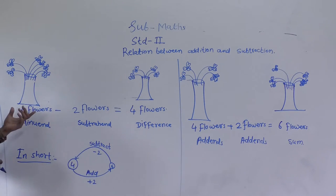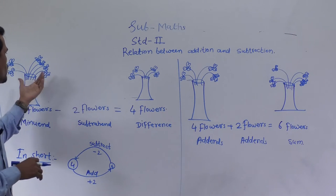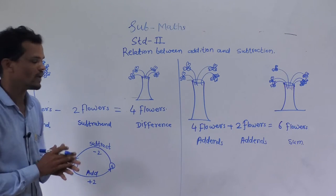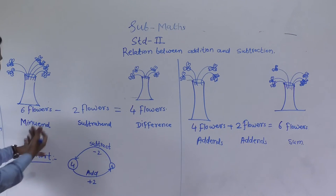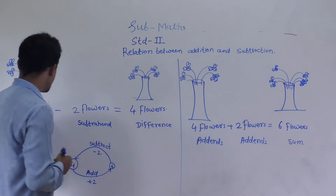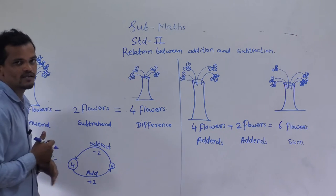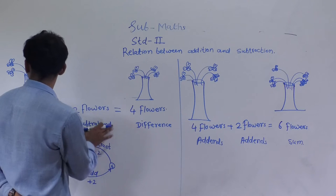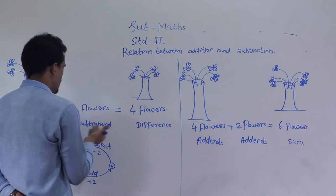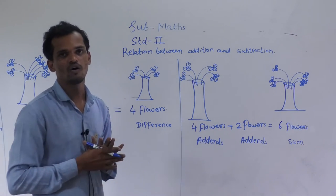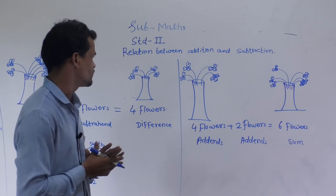See here, there were 6 flowers in the vase. Radha picked 2 flowers from them. How many flowers are left? 4 flowers are left. So here 6 is the minuend — a number from which another number is to be subtracted is called the minuend. This 2 is called the subtrahend, means a number to be subtracted from another number, and 4 is the difference, means the result of subtraction is called the difference.